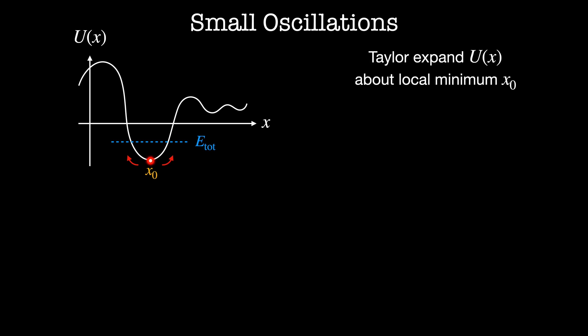We get that the potential energy is approximately equal to the potential energy at x₀, plus U'(x₀), which is necessarily zero because we're at a local minimum, times (x - x₀), plus ½U''(x₀)(x - x₀)² plus higher order terms.